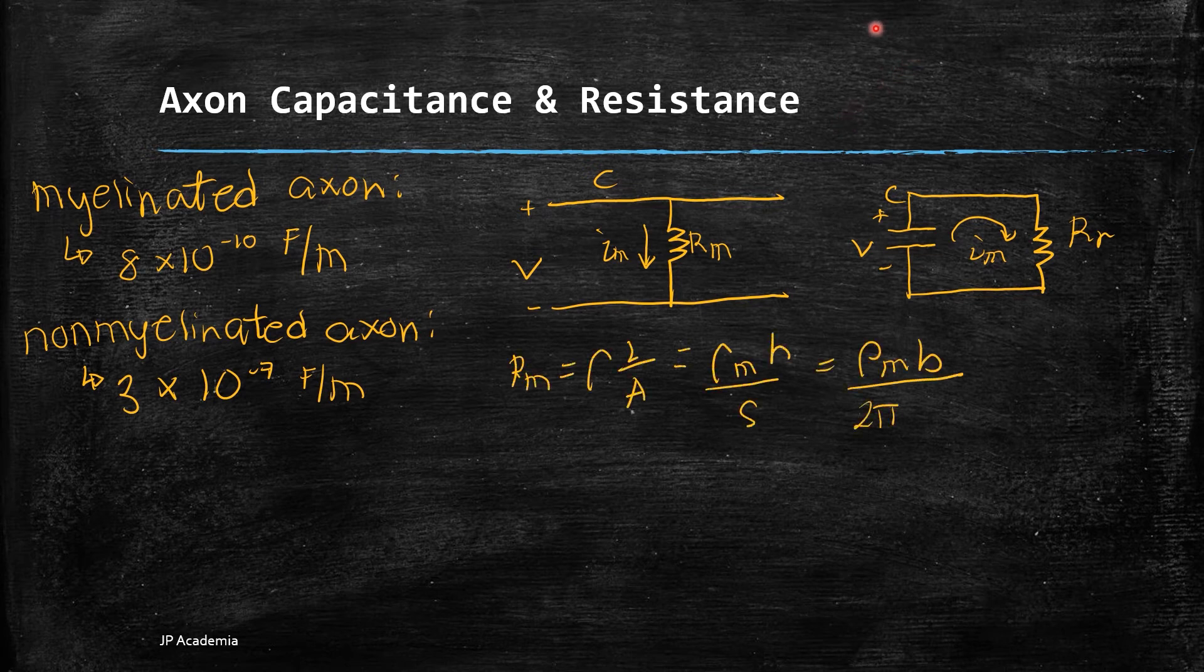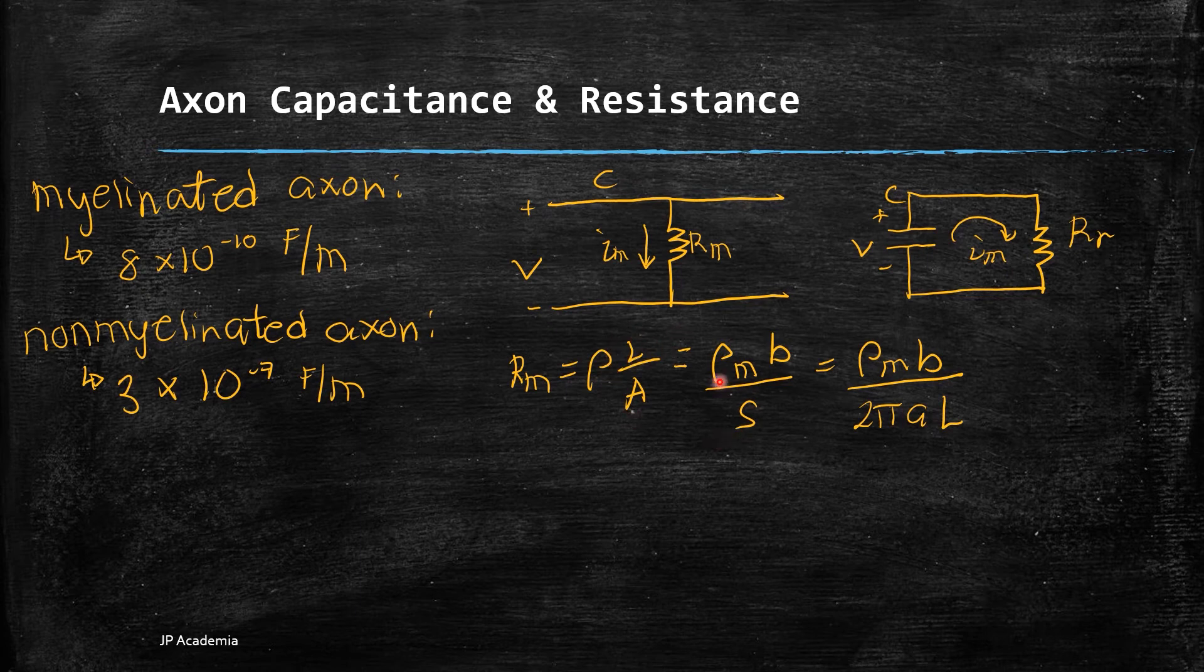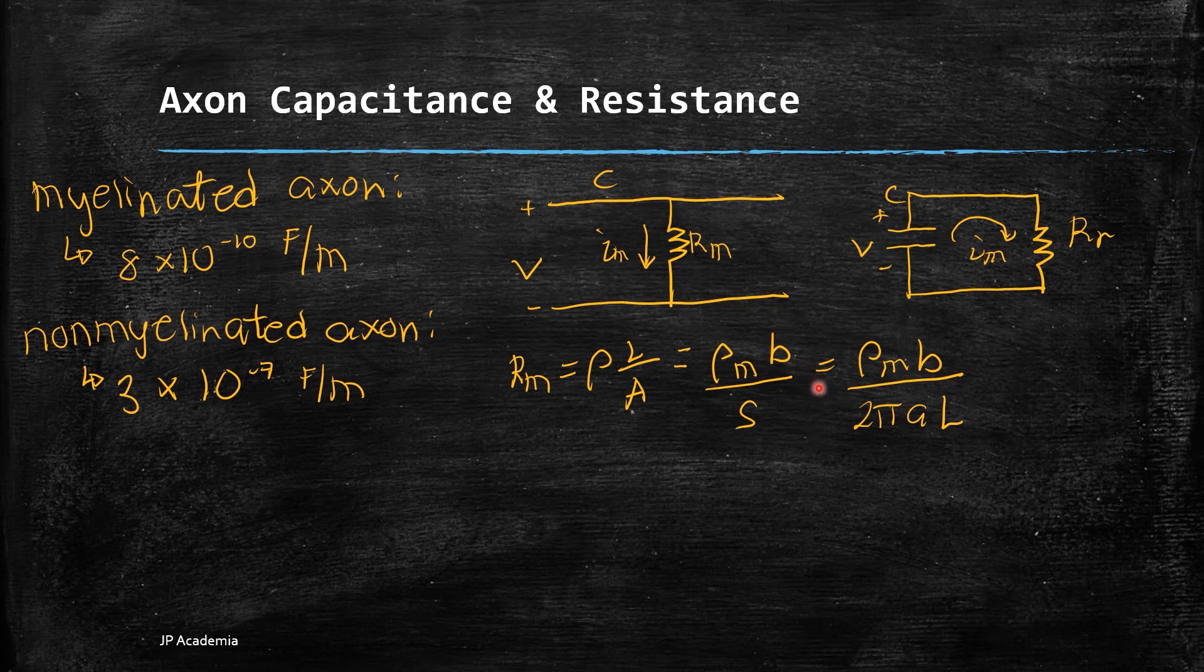Using the expression for resistance, we can express it using the electrical resistivity of the membrane. Using our usual formula ρL/A, we have R_M = ρ_M × B/S, where ρ_M is the electrical resistivity of the membrane, B is the membrane thickness, and S is the surface area.